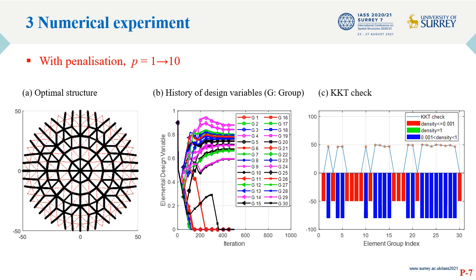Here comes our second example, where the penalization factor is gradually increased from 1 to 10 during the optimization process. The optimal structure is shown in A, the history of the design variables is shown in B, where we can see more elements are with densities close to 0, but still there exist a lot of elements with intermediate density. Similar to the previous example, the KKT check supports that the optimization result is one of the local minimum.